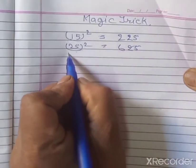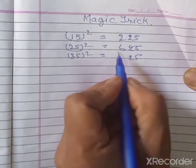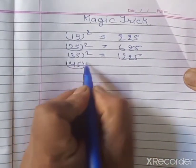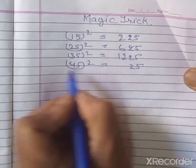For 45 squared, we write 25 and 4 times 5 equals 20, giving 2025.